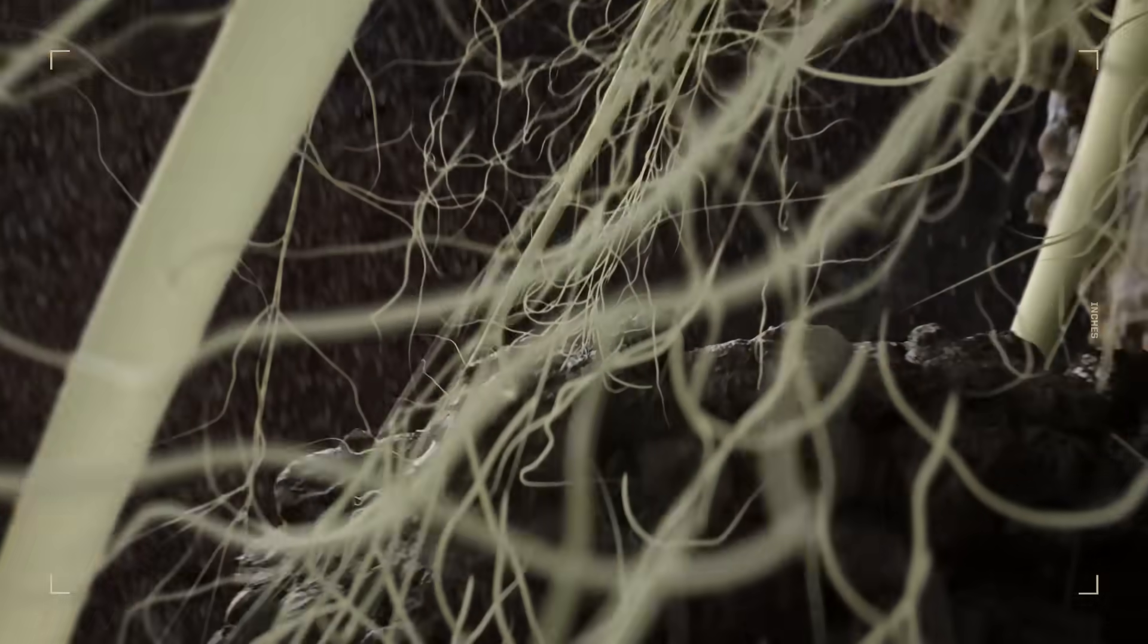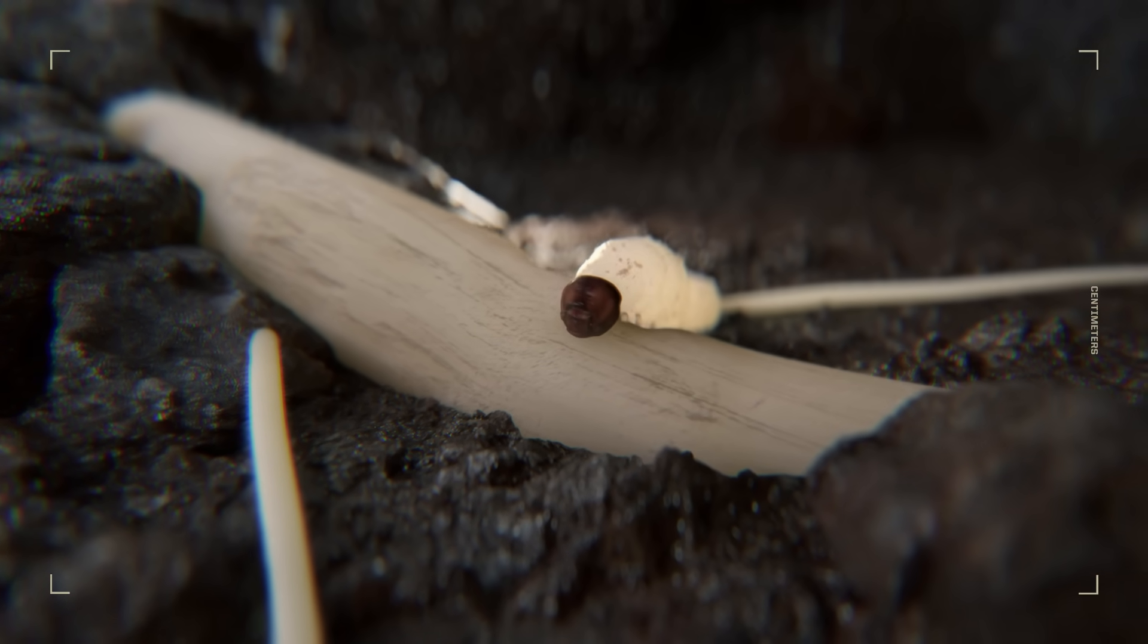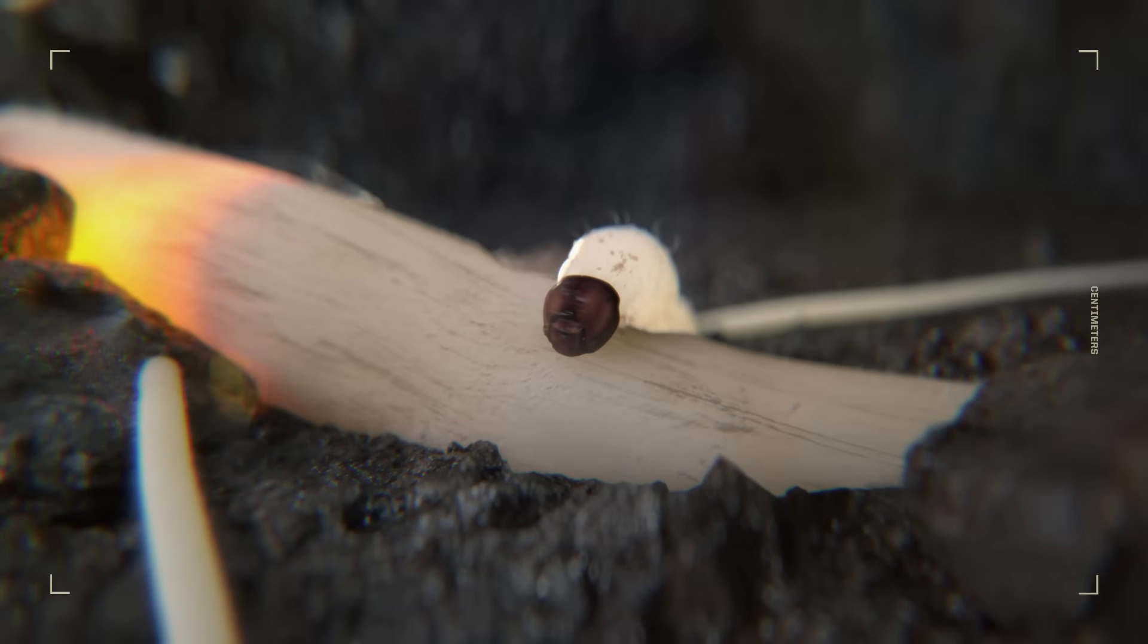Like BT traits, the RNAi-based trait is built into the corn plant, waiting for corn rootworm to feed on it. Once they do, the technology goes to work.